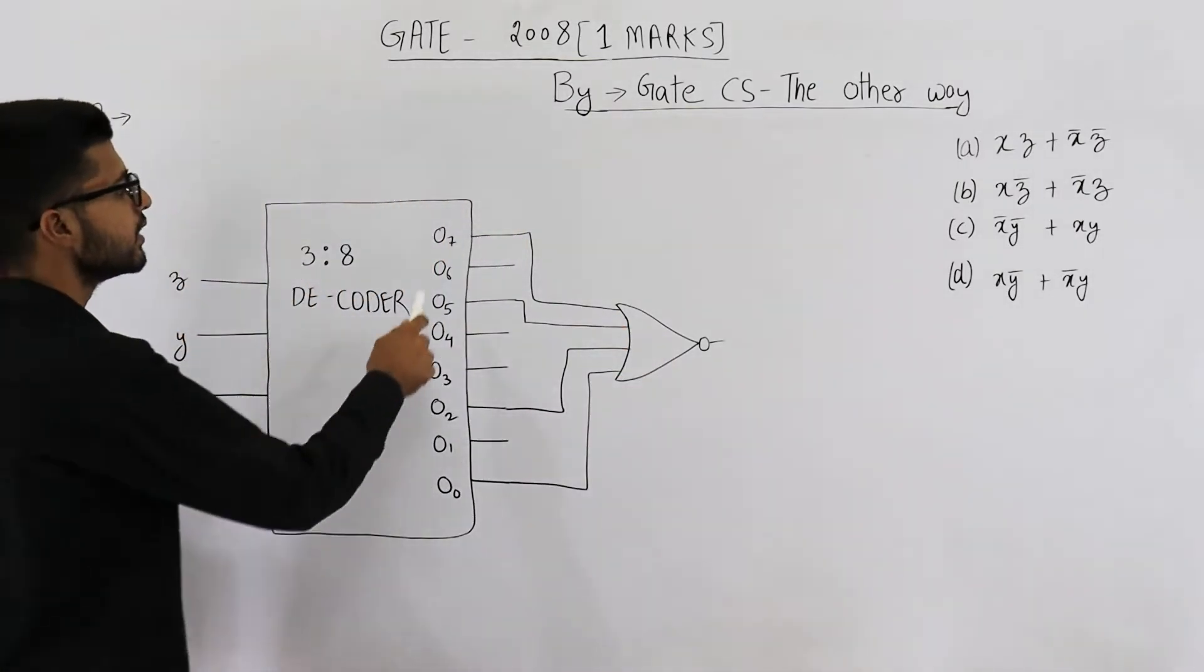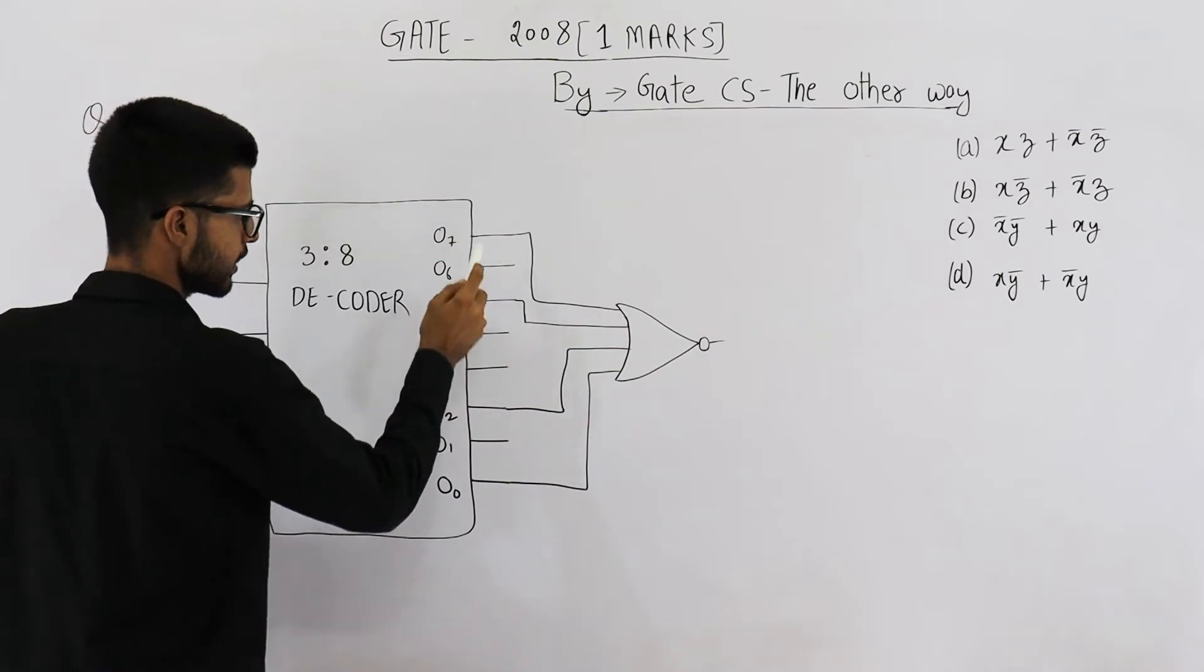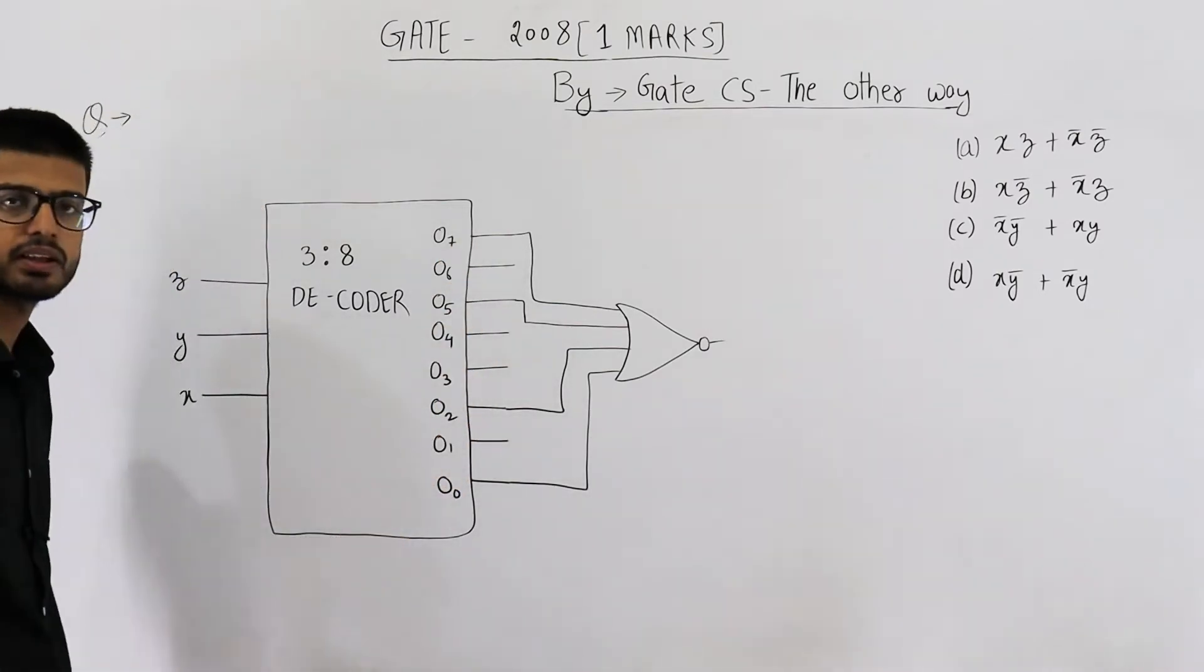When will these four outputs be high? That means 7, 5, 2, and 0. When will they be high?